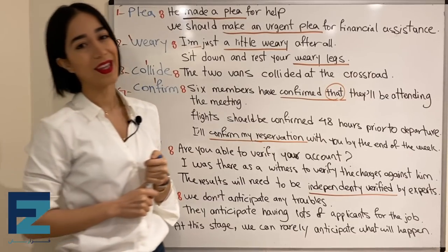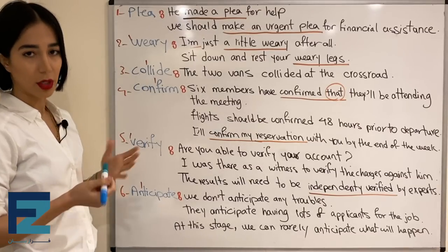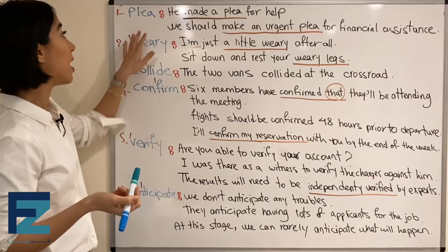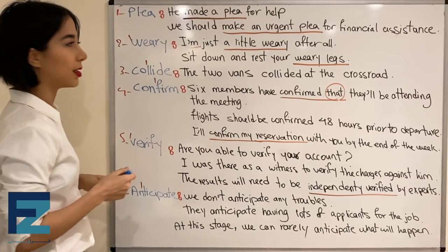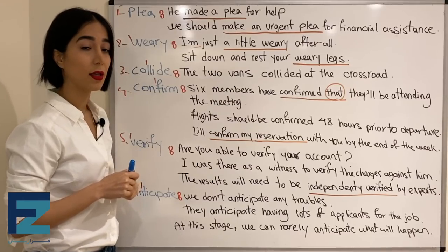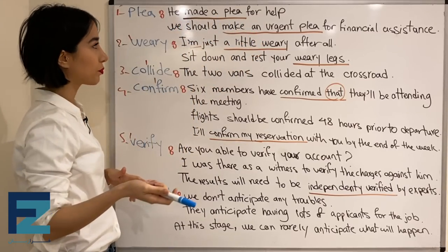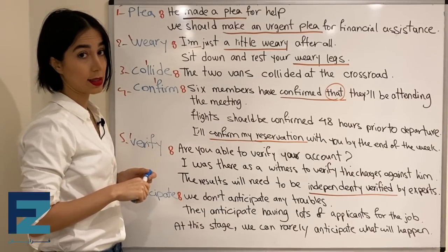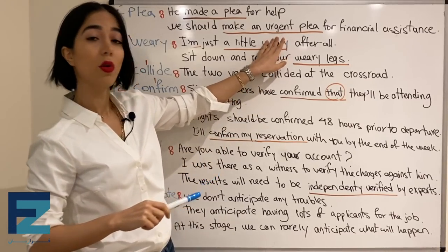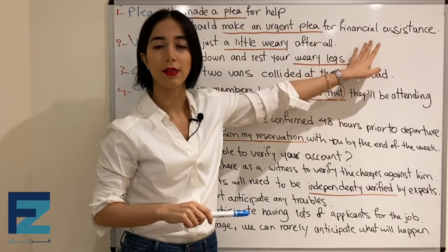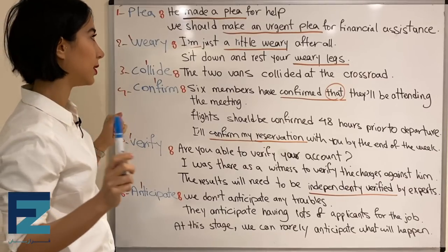Number one: plea. Plea means a request — it is a synonym for request. Because it only has one syllable, it has no stress. For example: 'He made a plea for help.' To make a plea means to make a request, یعنی درخواست کردن. 'We should make an urgent plea for financial assistance.' An urgent plea یعنی یک درخواست ضروری. Financial assistance یعنی کمک مالی.